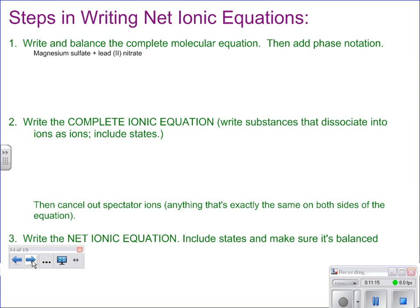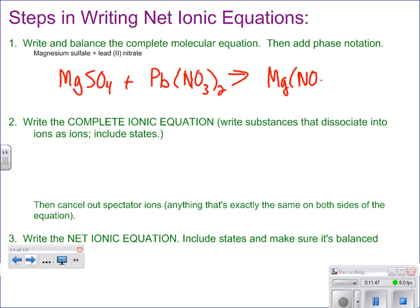Next example: magnesium sulfate plus lead(II) nitrate. We know this is a double replacement reaction — nothing special about it. It's just a normal double replacement forming magnesium nitrate plus lead(II) sulfate. If it's lead(II) on the left, it stays lead(II) on the right. That's our molecular equation. We go through and balance it — it's balanced.